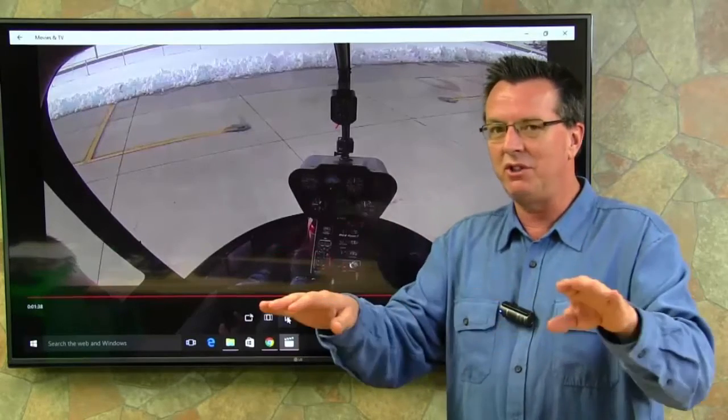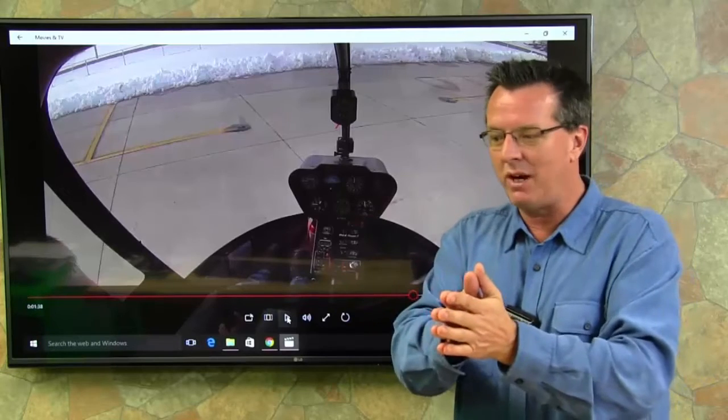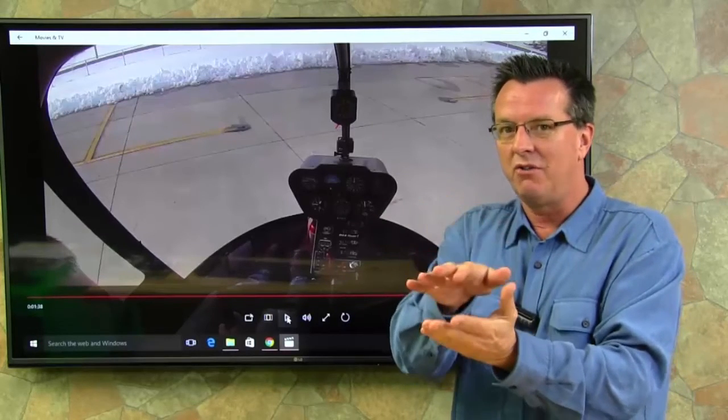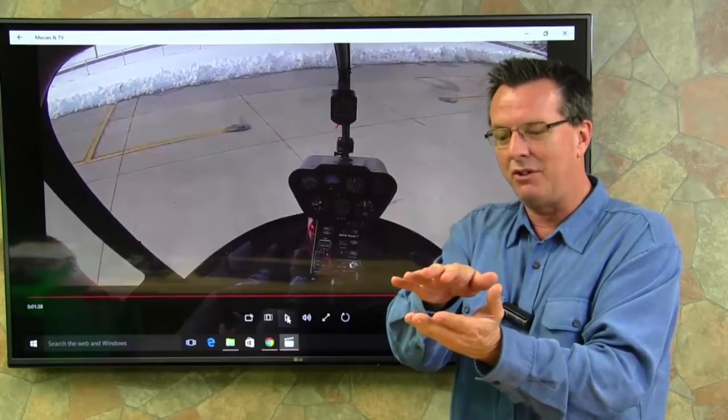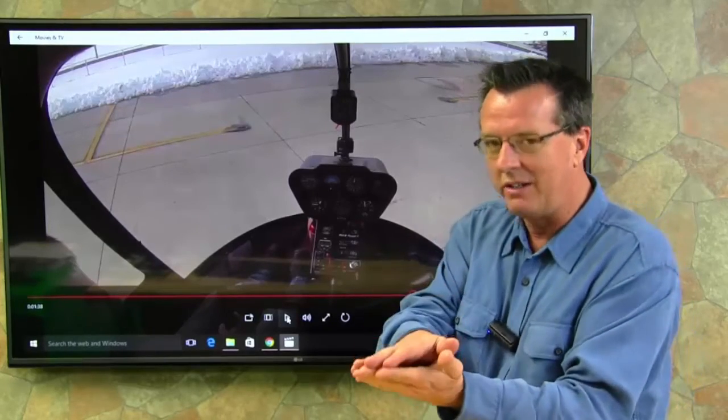You can see with your peripheral vision where the ground's at. If the nose is straight and you're not moving sideways and you're not moving backwards, you'll find it. When you're coming down, just a nice little push to set it on down to the ground.